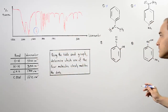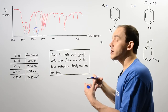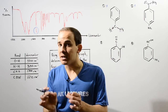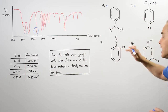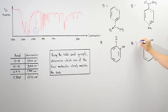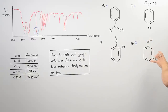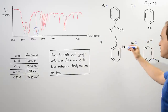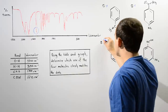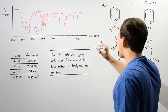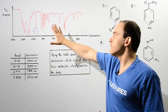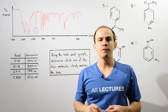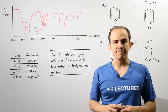This implies that our molecule must have the C≡N bond, and therefore it cannot be molecule four because molecule four does not have this bond. So we can see that molecule three is our molecule that closely matches the given infrared spectroscopy graph.